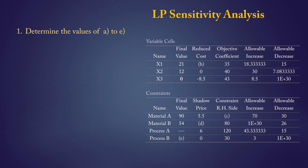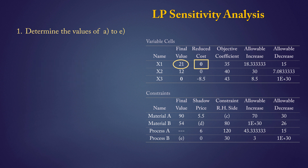The same logic applies for B. Since we already have a positive value for x1, the reduced cost will be 0. This is because x1 is already being produced, so we don't need to justify its production. In essence, if a final value is positive, its corresponding reduced cost will be 0.